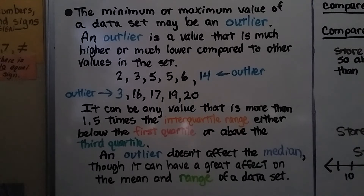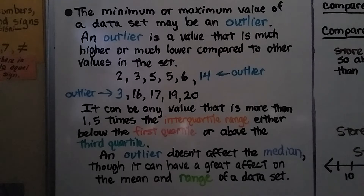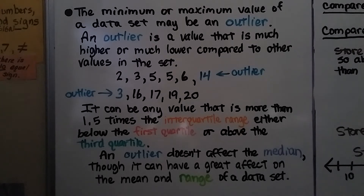If we have a 3, then a 16, 17, 19, 20, that 3 is the outlier. And it can be any value that is more than 1.5 times the interquartile range, either below the first quartile or above the third quartile. An outlier doesn't affect the median, though it can have a great effect on the mean and the range of a dataset.